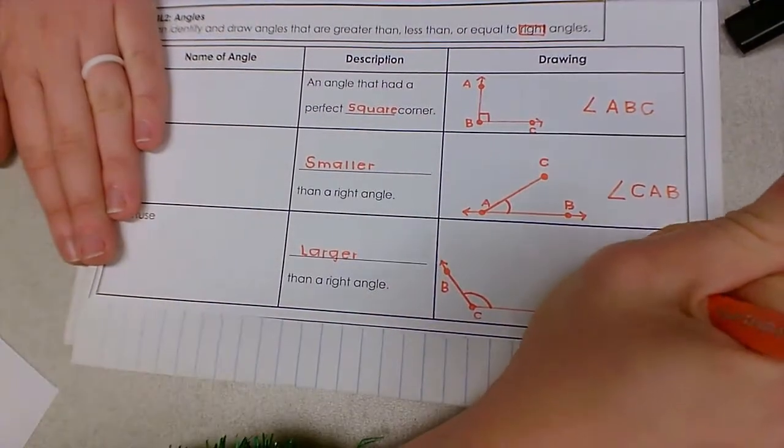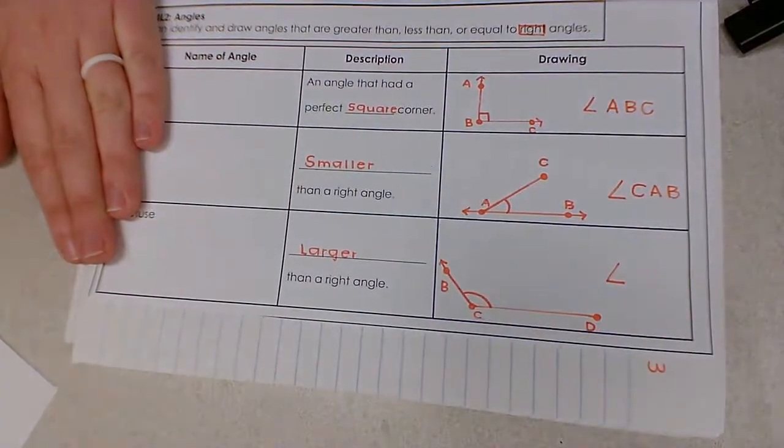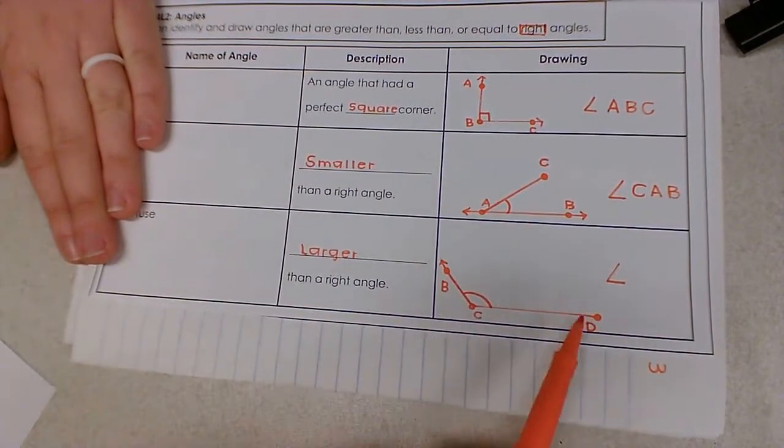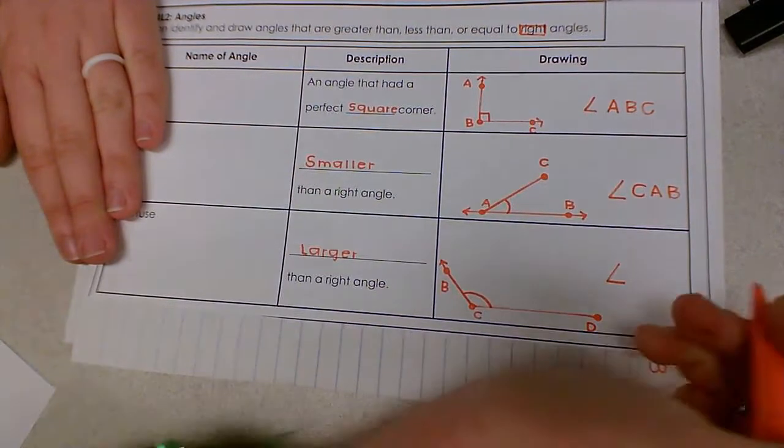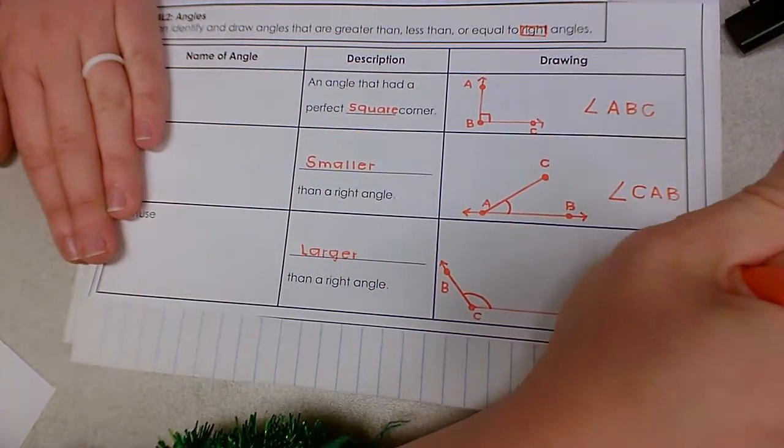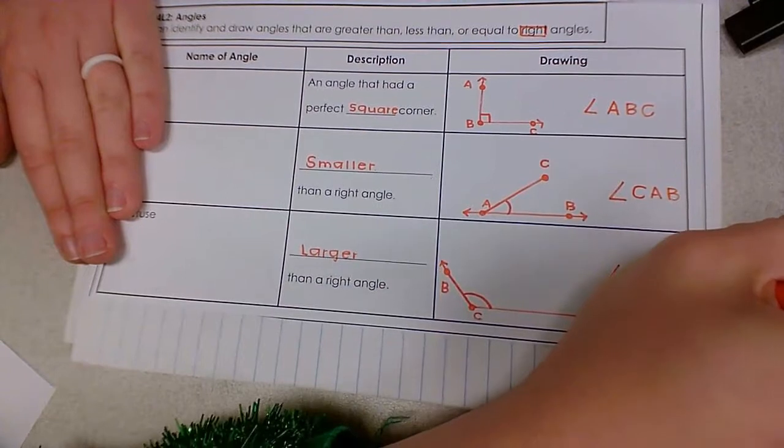One last time, draw your crocodile mouth for your label. We could call this BCD or DCB, as long as C is our center letter since it's our shared endpoint. I'll call it DCB.